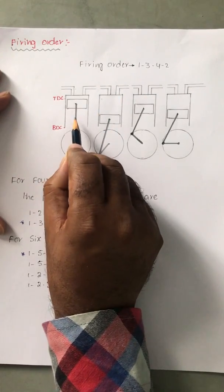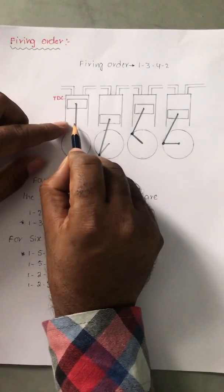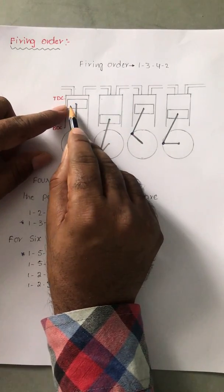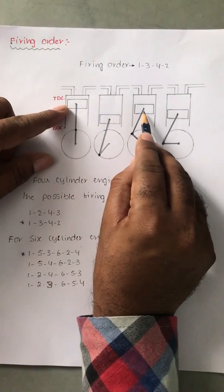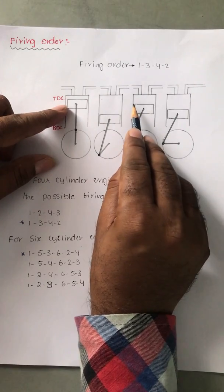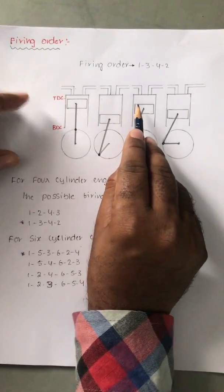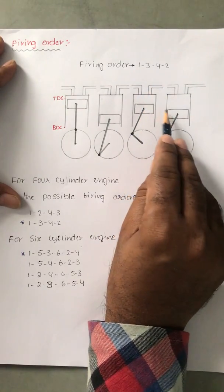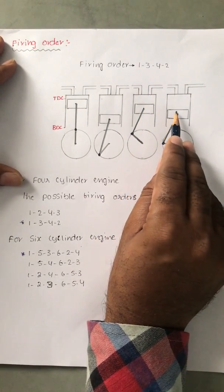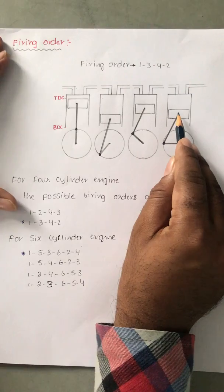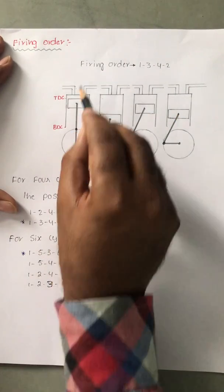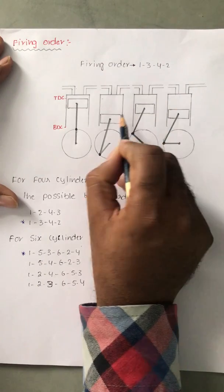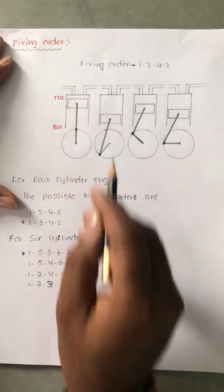This means the first cylinder fires first — it is moving towards TDC. The next cylinder to fire is the third cylinder, which is somewhat farther away from TDC. After the third, the fourth cylinder fires, and then the second cylinder fires. So the firing order is: cylinder one fires, then cylinder three, then cylinder four, then cylinder two.